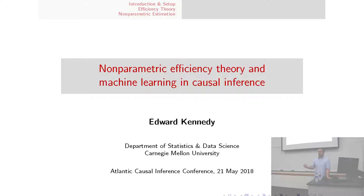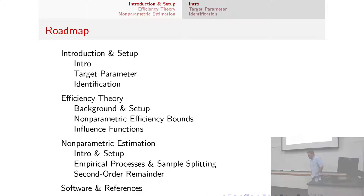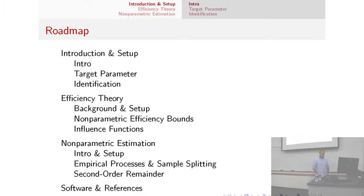How many people have seen causal inference papers and are taking a class or something? So you're familiar with the basic ideas of causal inference and notation. Some of the first part might be review. I'll start by giving the way I think about causal inference in general, and then I'll talk for most of the time about the statistics side of causal inference — what's the best we can do in estimating a causal quantity, and how can we construct estimators that are optimal in a certain sense.